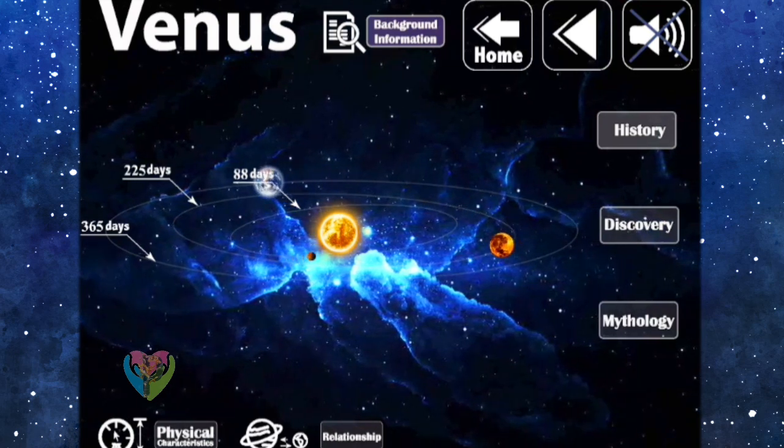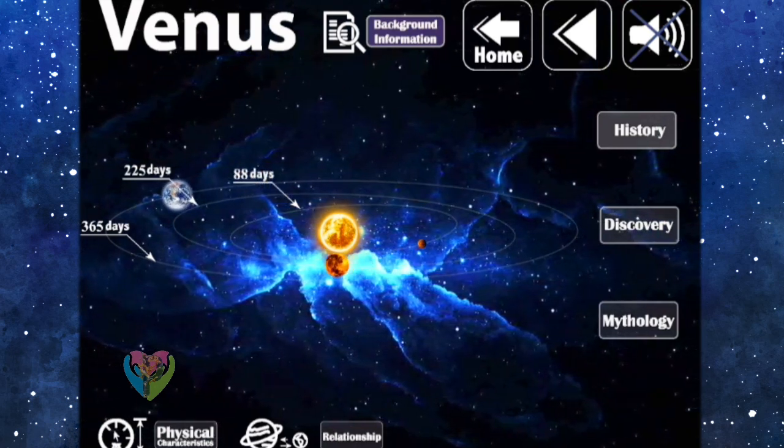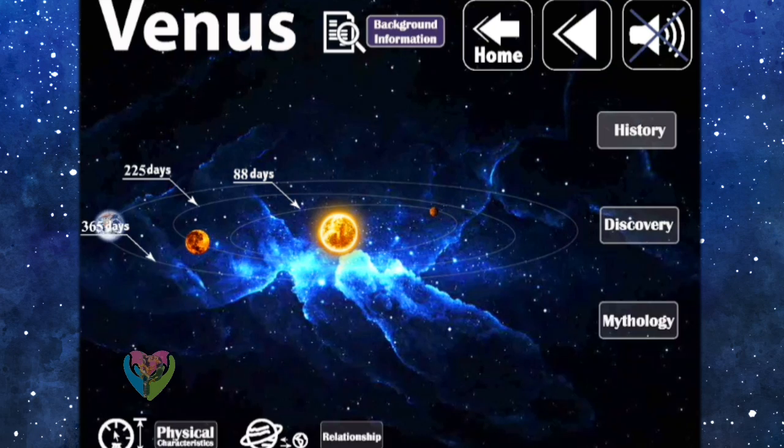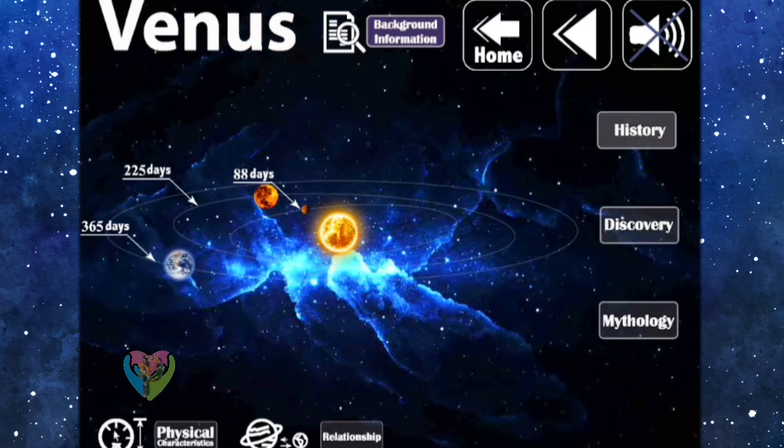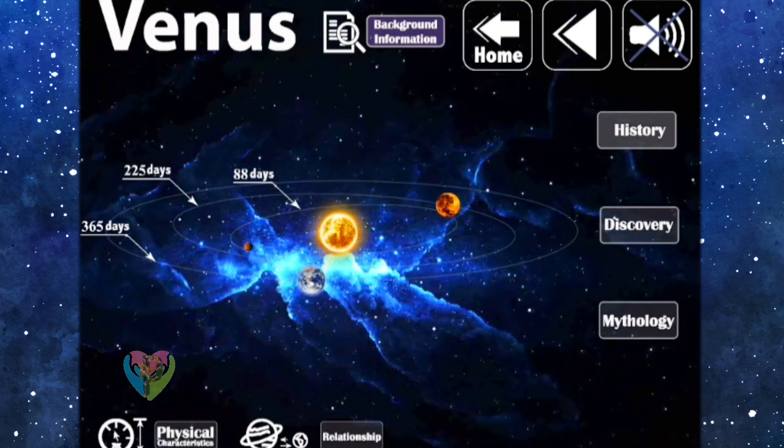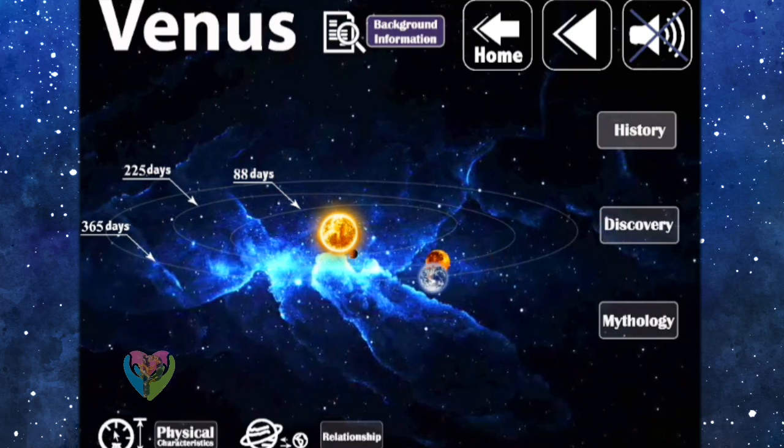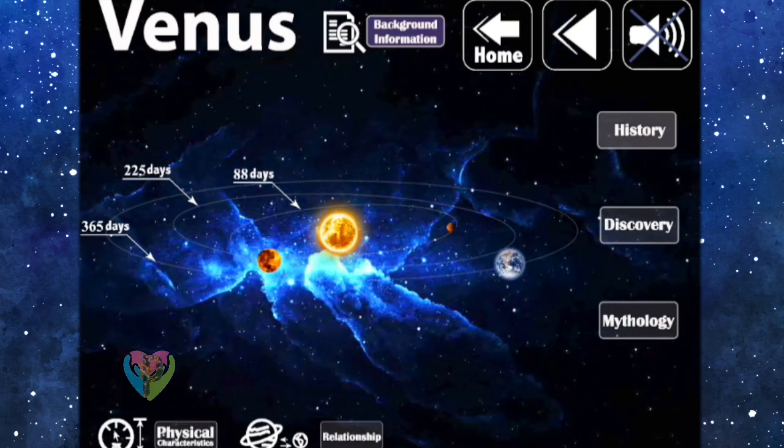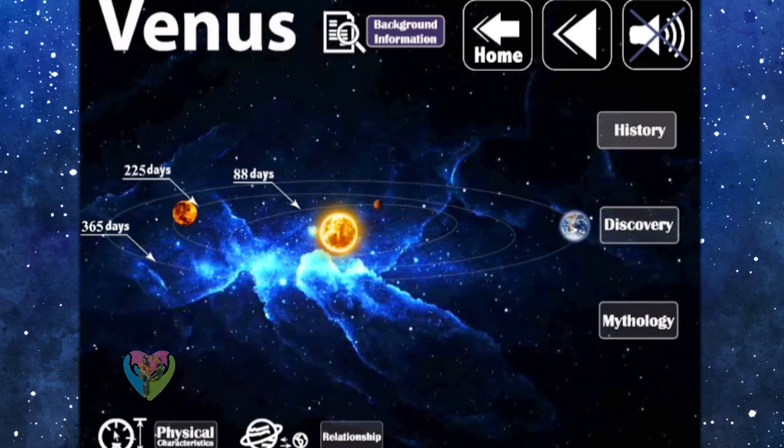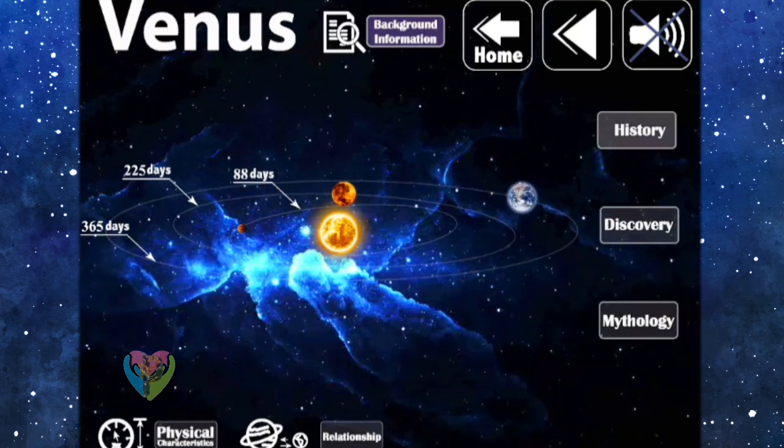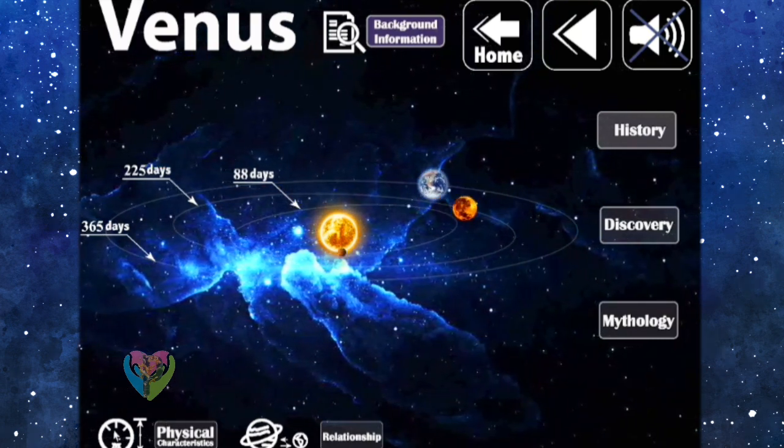Venus rotates clockwise, while the other planets rotate counterclockwise. It takes 243 days to rotate on its own axis due to the influence of gravity of the Sun. And it takes 225 days to orbit around the Sun. We see Venus as a very bright planet because Venus has a dense atmosphere.